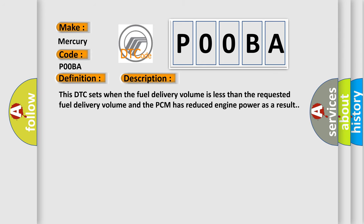And now this is a short description of this DTC code. This DTC sets when the fuel delivery volume is less than the requested fuel delivery volume and the PCM has reduced engine power as a result.